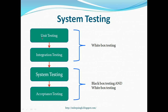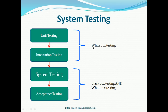One thing to notice here is that unit testing and integration testing are white box testing, because they involve having knowledge about the software internals. System testing and acceptance testing are a combination of black box testing and white box testing. The majority of system testing and acceptance testing can be done in a black box fashion without knowing details about the internals, but there are some types of testing done in system testing, like performance testing and security testing, which do require knowledge about the internals. Overall, we can say that unit testing and integration testing are majorly white box testing, and system testing and acceptance testing are majorly black box testing.